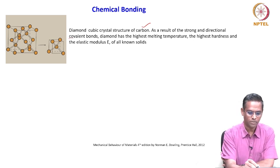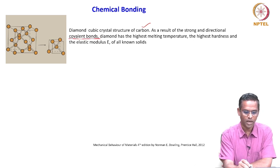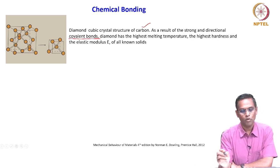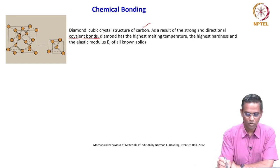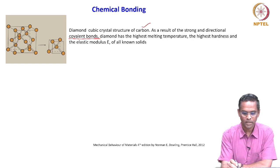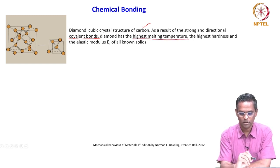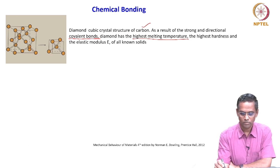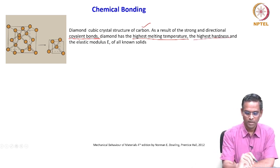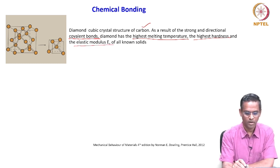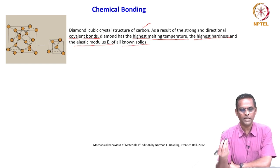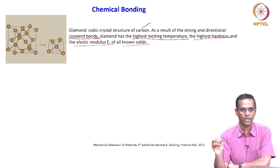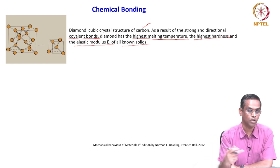This is one interesting aspect of covalent bonds relevant to mechanical behavior: covalent bonds are directional in nature, they are very strong, and that is why diamond has the highest melting temperature and also the highest hardness and elastic modulus of all known solids.